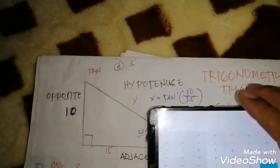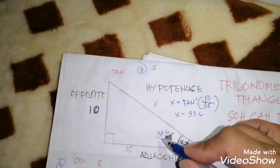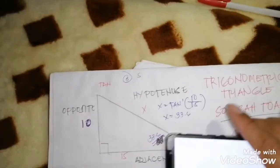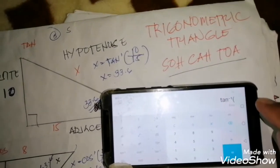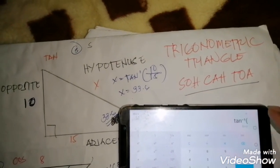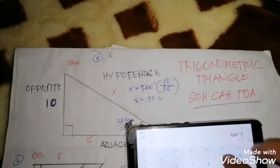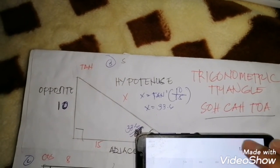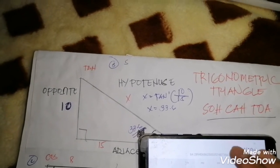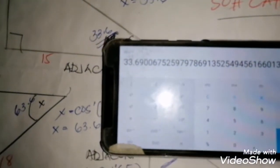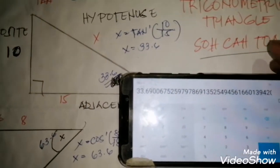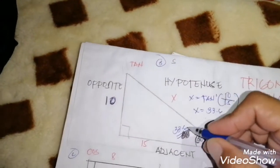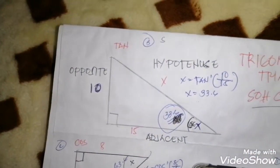For tangent: press tan inverse, then put 10 divided by 15, and the answer is 33.6 degrees. So we now have the answer for x: 33.6 degrees.